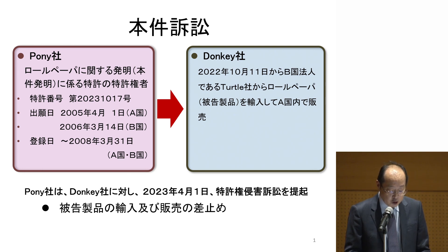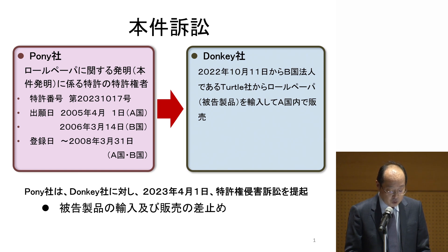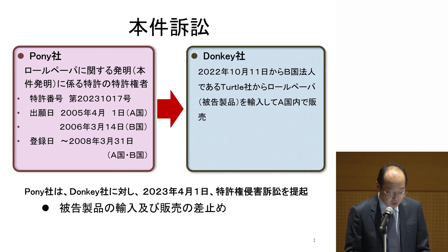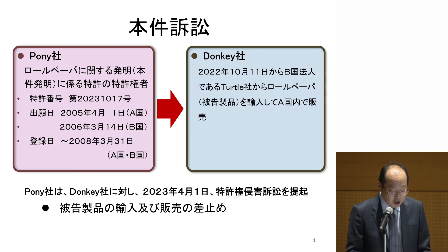Collie manufactures and sells roll paper using the invention in Country B. The defendant is a corporation in Country A named Donkey, which imports roll paper manufactured by a corporation in Country B called Turtle and sells it in Country A. I will call this roll paper the defendant's product. Pony alleges that the importation and sale of the defendant's product infringes Pony's patent rights and seeks an injunction against the importation and sale of the defendant's product.